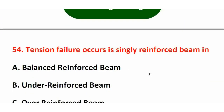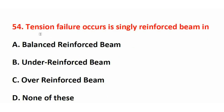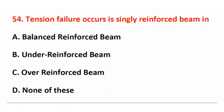First question: Tension failure acquired in a singly reinforced beam is? In the singly reinforced beam section, tension failure occurs in an under-reinforced section. The right answer is under reinforced beam. Tension failure is acquired in an under reinforced beam. Over reinforced beam and balanced reinforced beam are primarily compression failure.